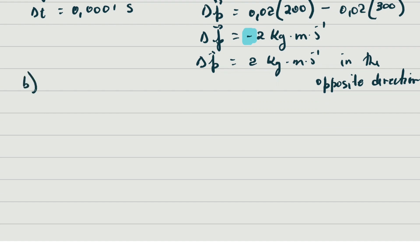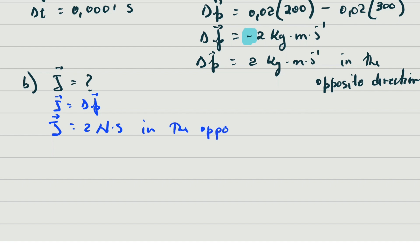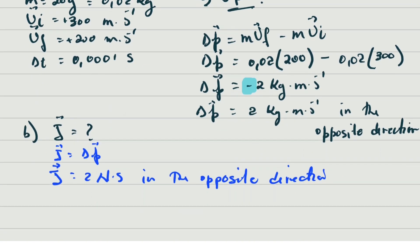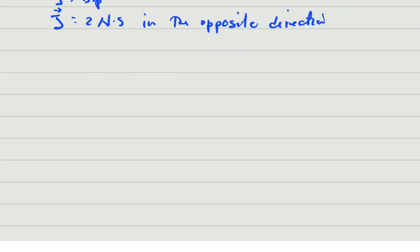For part (b) we calculate the impulse of the bullet. We use the impulse-momentum theorem: impulse equals change in momentum. So the impulse is 2 newton-seconds in the opposite direction. Note that in some questions they may ask for impulse directly, but you would still need to calculate the change in momentum first because they are equal to one another.